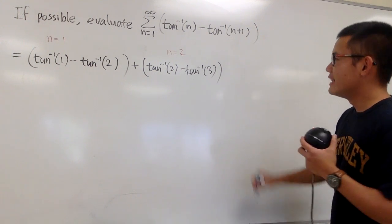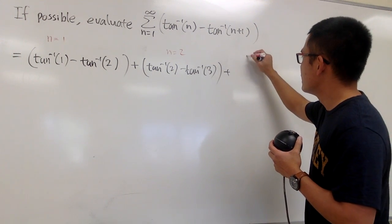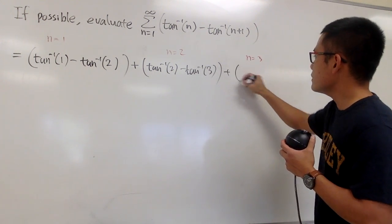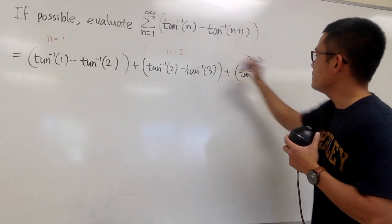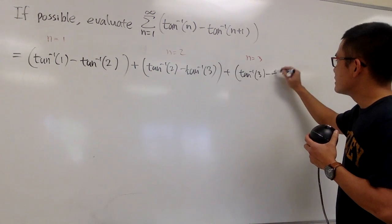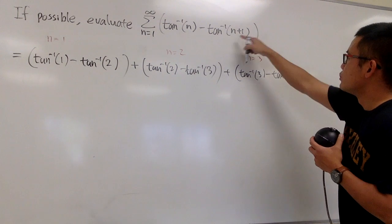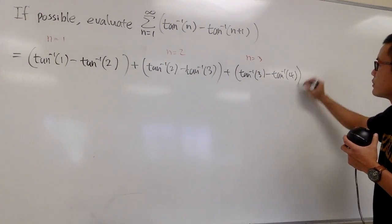And let me just put on one more, plus n is equal to 3. So, inverse tangent of 3 minus the inverse tangent of 3 plus 1, which is 4, and so on.